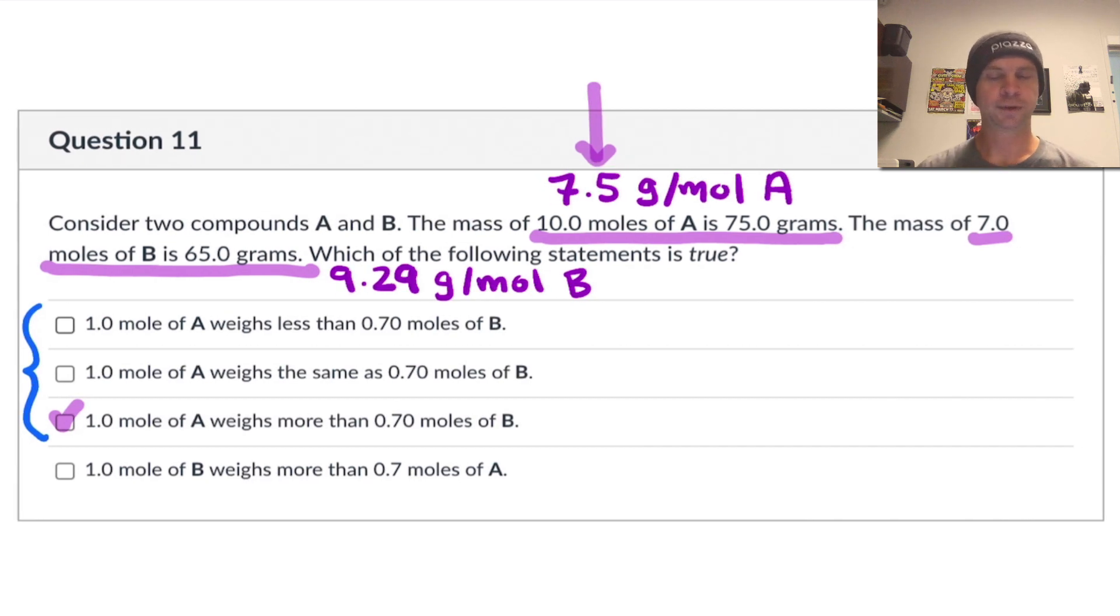What about 1 mole of B versus 0.7 moles of A? Well, 1 mole of B weighs 9.29 grams. We established that by calculating out the molar mass. 0.7 moles of A, if we just stop and think logically for a second. 0.7 moles of A has to weigh less than 7.5 grams, right? Because the mass of 1 mole of A is 7.5 grams. And so we can then conclude, well, yeah, 1 mole of B, 9.29 grams, has to weigh more than less than a mole of compound A. So this statement is also true.